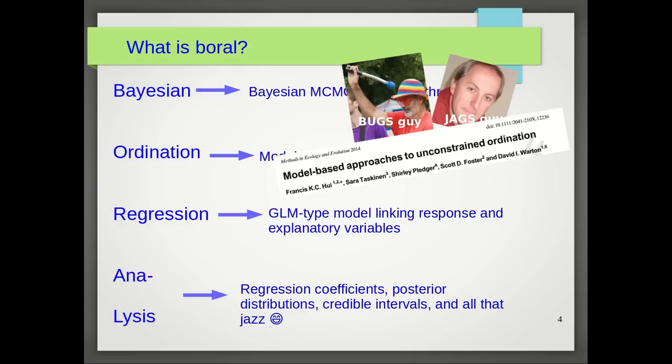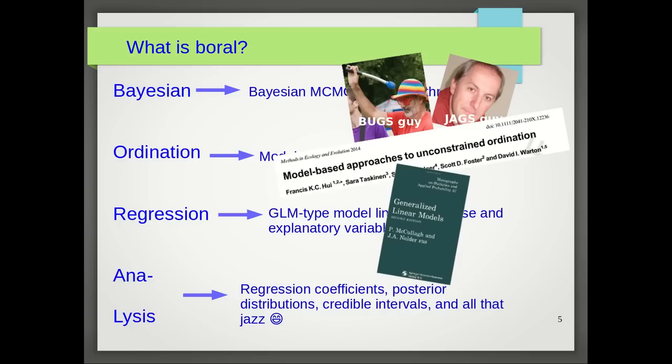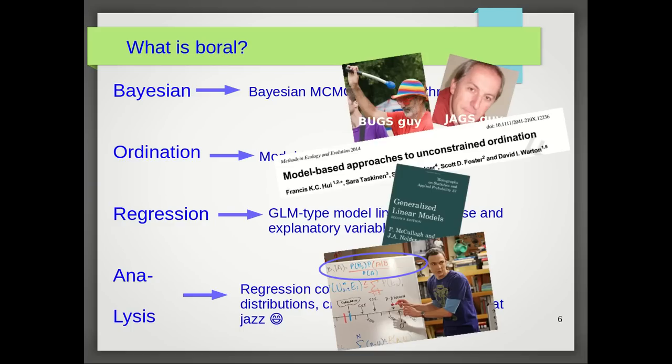Aside from ordination, BORAL also does regression, so it's a generalized linear model or GLM type model linking the responses to one or more explanatory variables. In fact, BORAL actually does more than this because it includes ways to try and account for any potential correlation between the responses, for example correlation between species. And finally, because we are doing Bayesian estimation, we do have the posterior distribution, so posterior means and medians, credible intervals and all that jazz associated with Bayesian analysis.